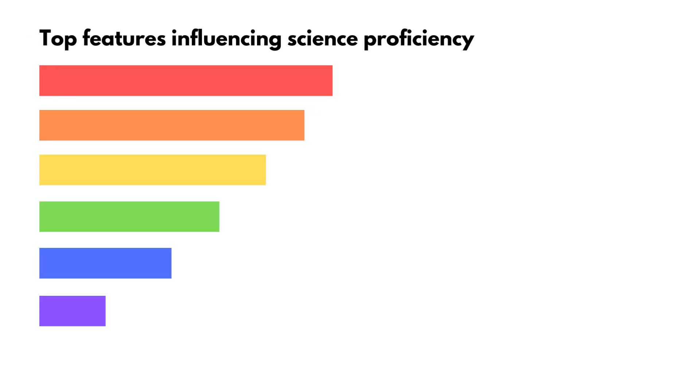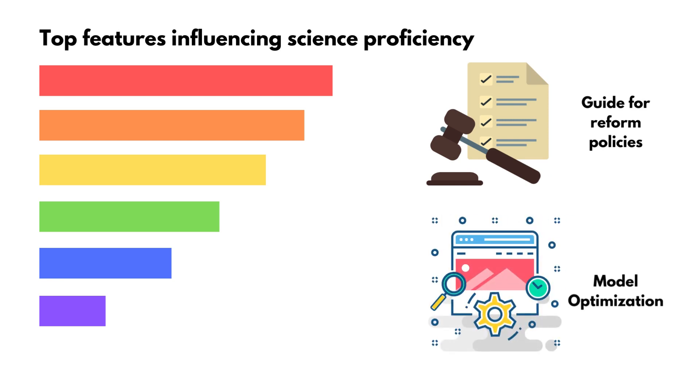With the features ranked according to their importance, they can now be used as a guide for reform policies on which aspects to focus on to improve science education. In fact, they can also be used to optimize our binary classification models, which is what we also did in the study.